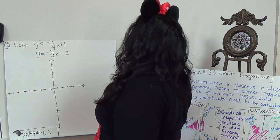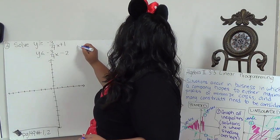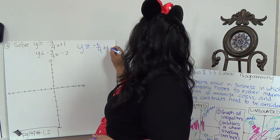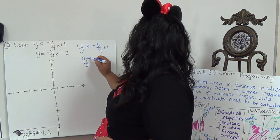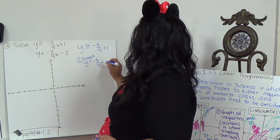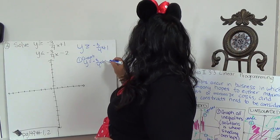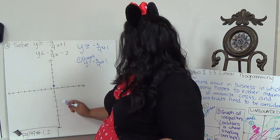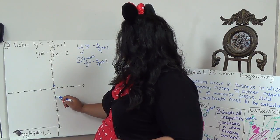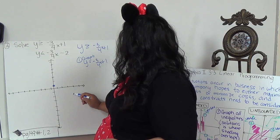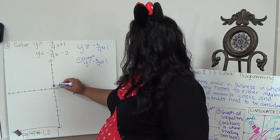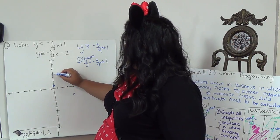So we're going to do the same thing. We're going to have y is greater than or equal to negative 3 fourths plus 1. So I'm going to graph the line. Y equals negative 3 fourths plus 1. So I'm going to start at 1. I'm going to go down 3. 1, 2, 3 over 4. 2, 3, 4.